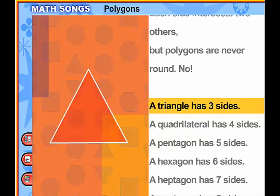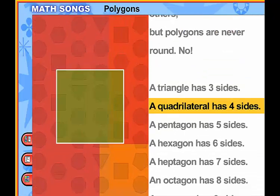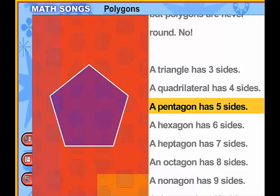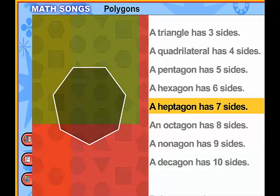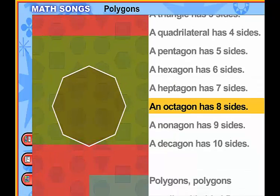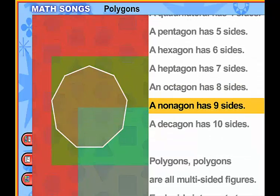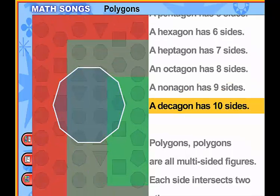A triangle has three sides, a quadrilateral has four sides, a pentagon has five sides, a hexagon has six sides, a heptagon has seven sides, an octagon has eight sides, a nonagon has nine sides, a decagon has ten sides.